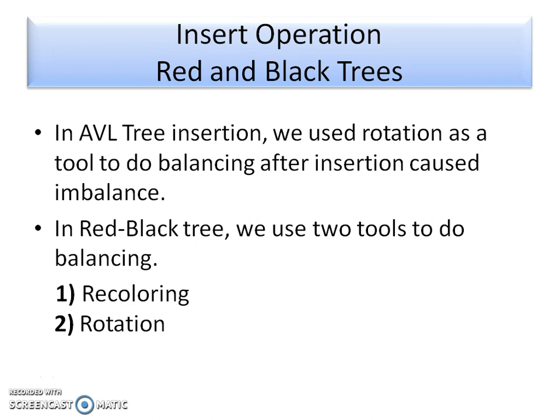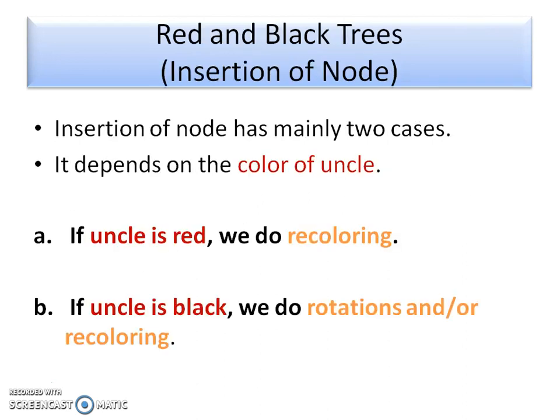Let's start with the insert operation. In comparison with AVL trees, AVL tree insertion uses different rotations to balance the tree. But here in a Red-Black tree we use two different tools to do the balancing. The first is recoloring and the second one is rotation. After insertion of any node, first we consider recoloring — if the tree is balanced after recoloring then there is no need to go for rotation. But if the tree is still not satisfying all six properties, then we need to go for rotation.